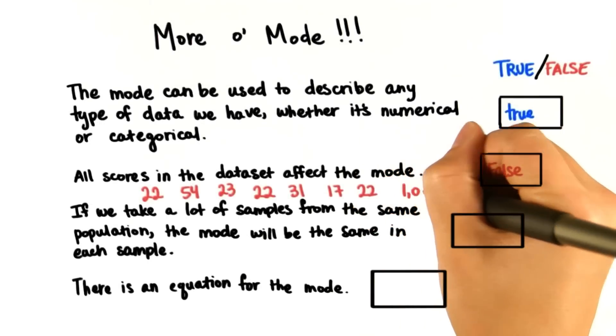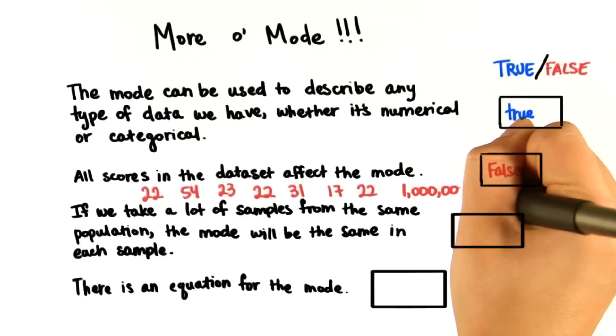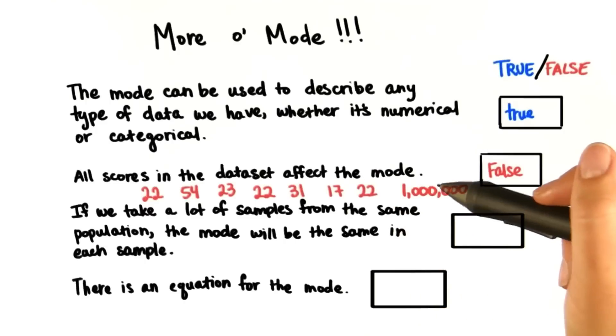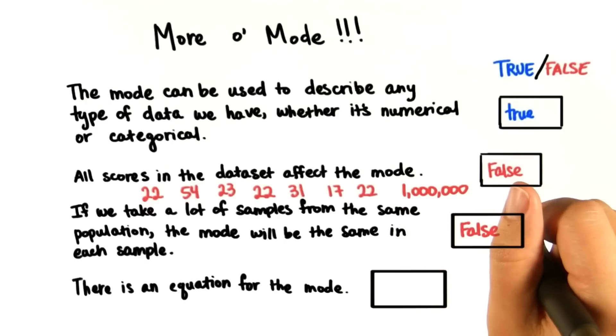Now, let's say we add an extreme value like 1 million. The mode will still be 22. So, we cannot say that all scores in the data set will impact the mode. This one is also false.